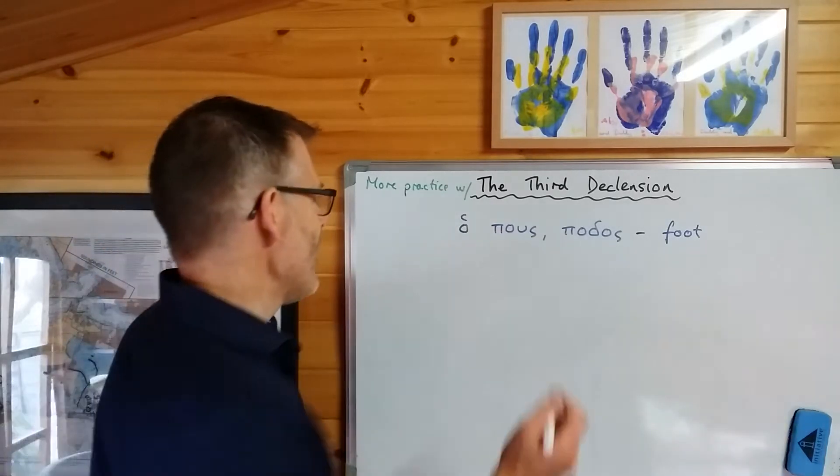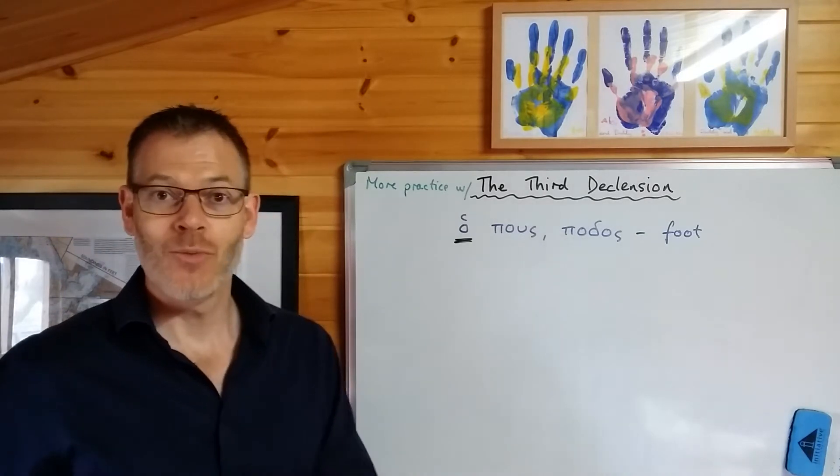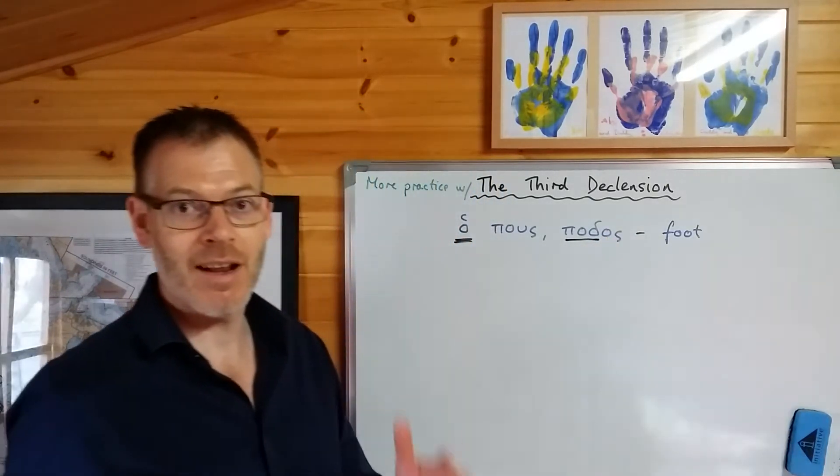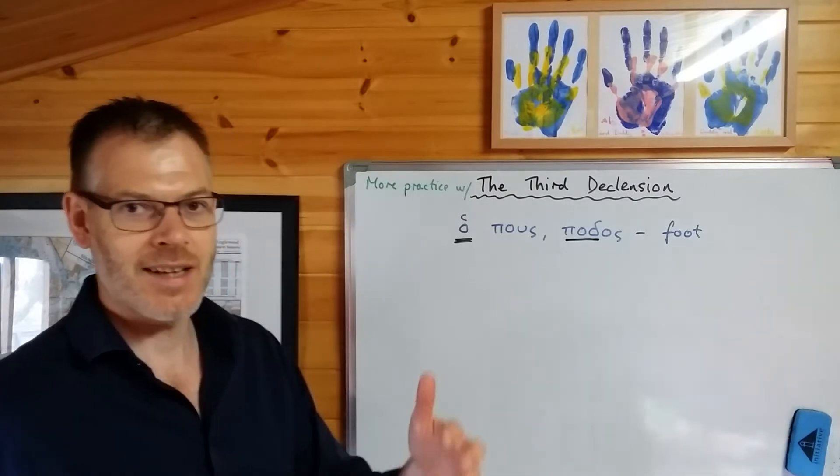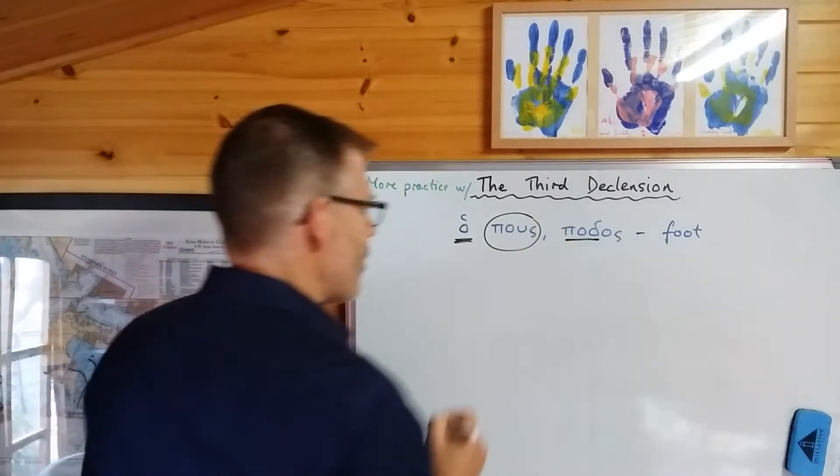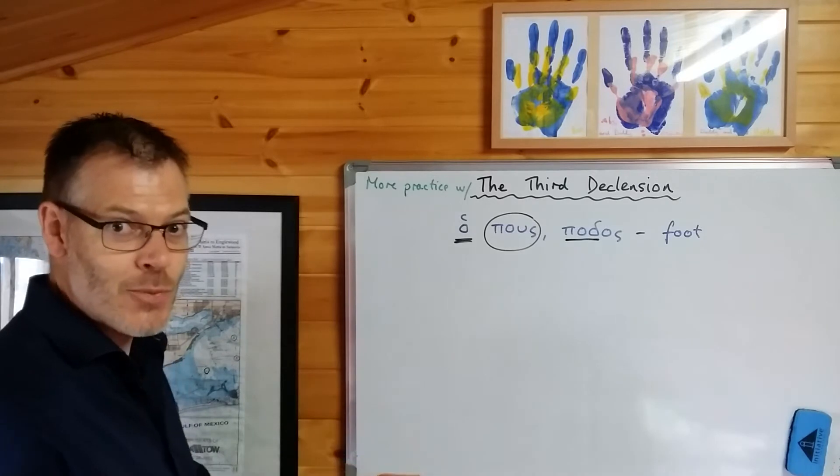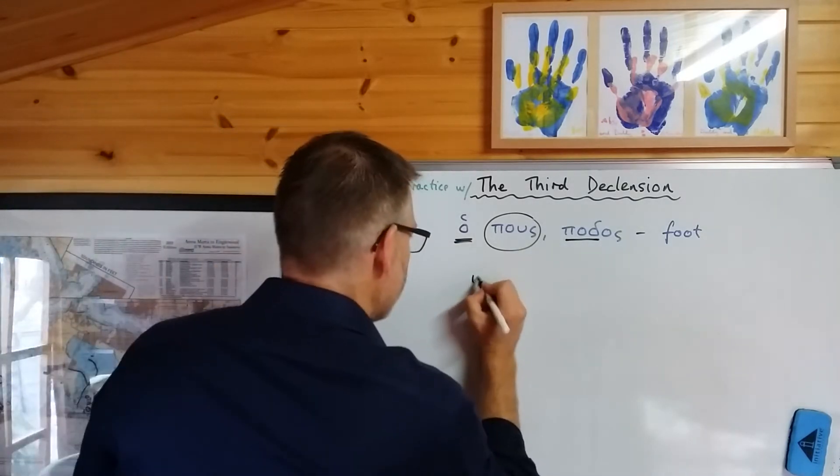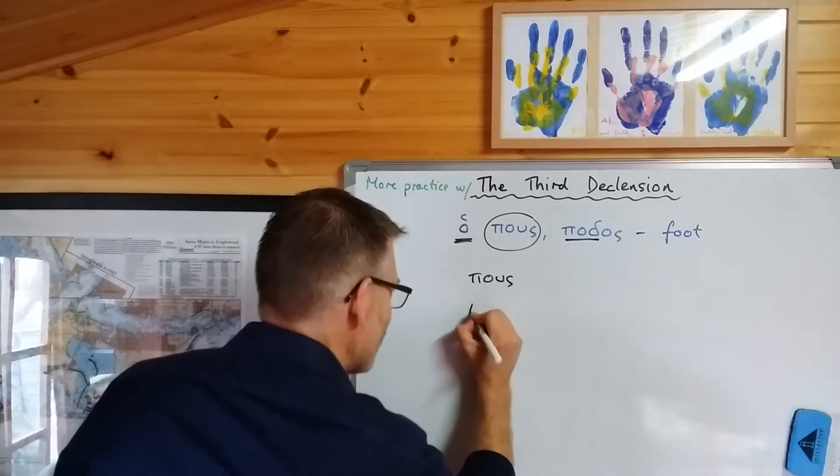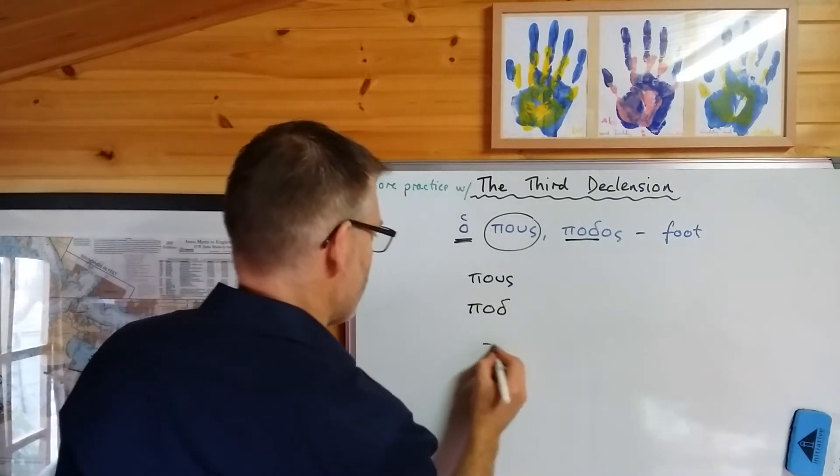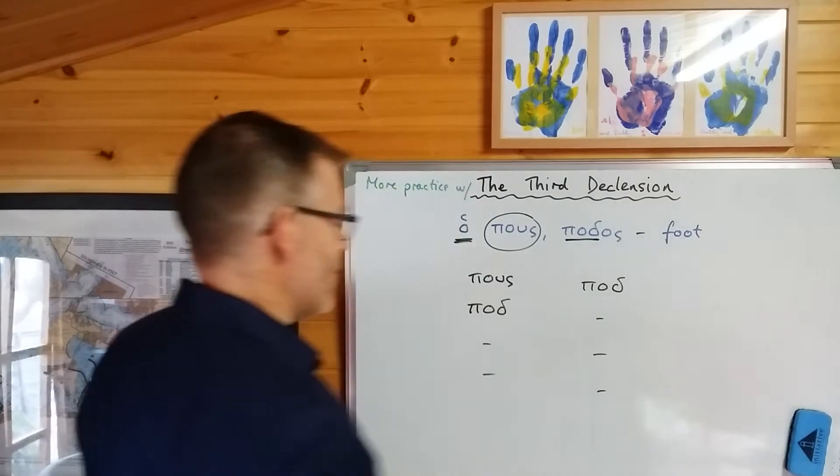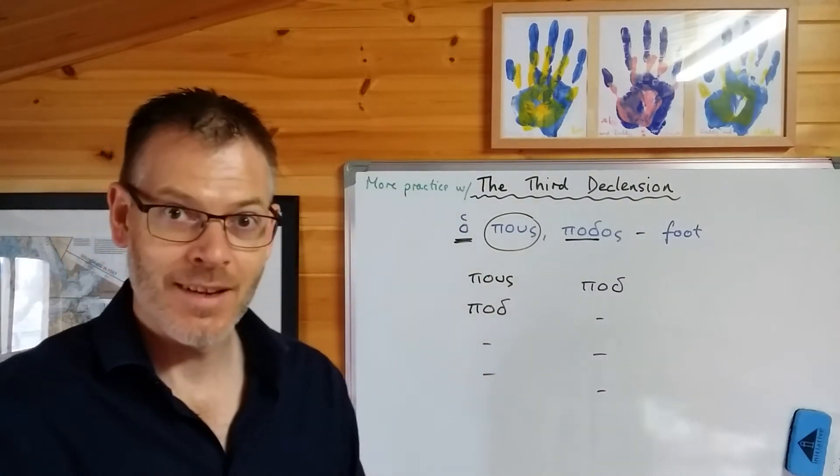Pous, podos. Well, you can guess what this means without even looking in the notes at the back of this chapter. Podiatry. Pod means foot. A podiatrist is somebody who helps you out with your feet if you've got collapsed arches or something like that. So that's what that means. But we're not interested in podiatry especially, we're interested in seeing can we generate the declension of this third declension noun by looking at this lexical form. We know that it's masculine, which means it will have the form that we've already seen with astēr.